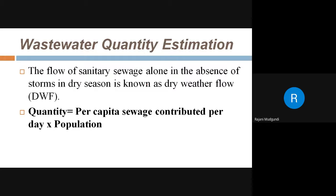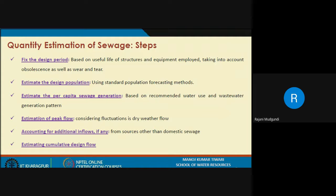How to estimate dry weather flow or wastewater quantity: just as we work out water demand based on population — per capita demand multiplied by population gives water requirement — on similar lines, per capita sewage contribution per day multiplied by population gives the quantity of wastewater generated.